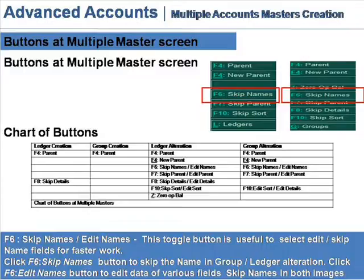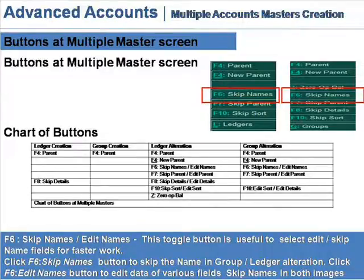F6 Skip Names / Edit Names. This toggle button is useful to select edit or skip the name field for faster work. Click the F6 Edit Names button to edit data of various fields.